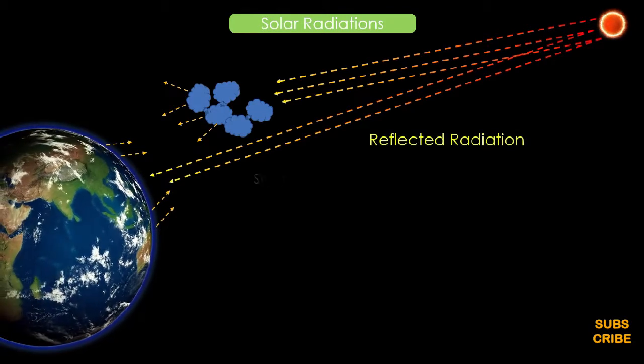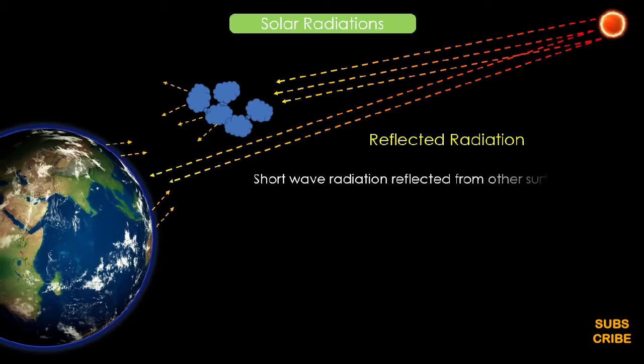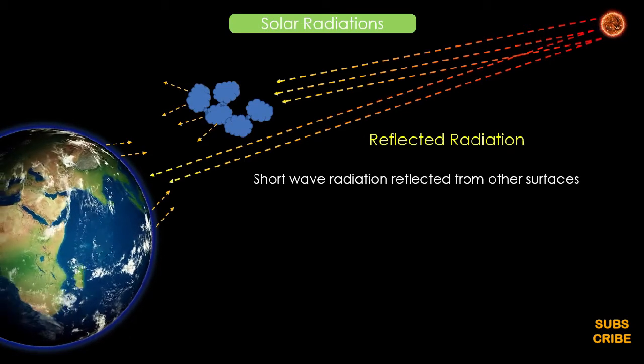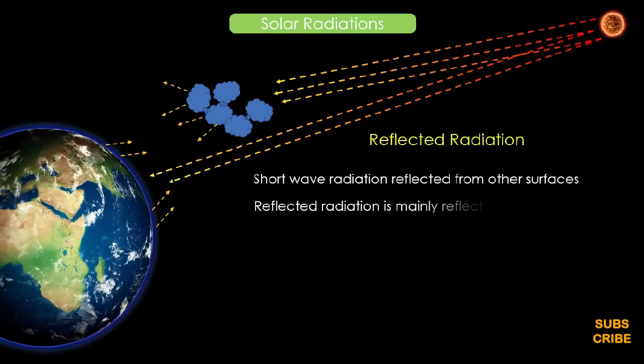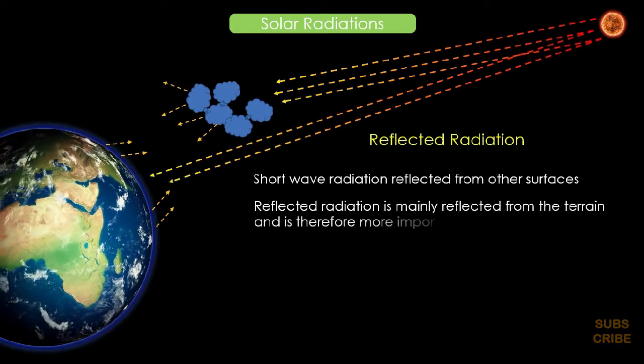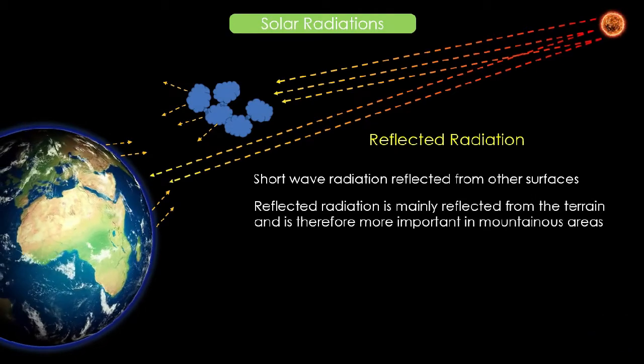Reflected radiation: short wave radiation reflected from other surfaces. Reflected radiation is mainly reflected from the terrain and is therefore more important in mountainous areas.